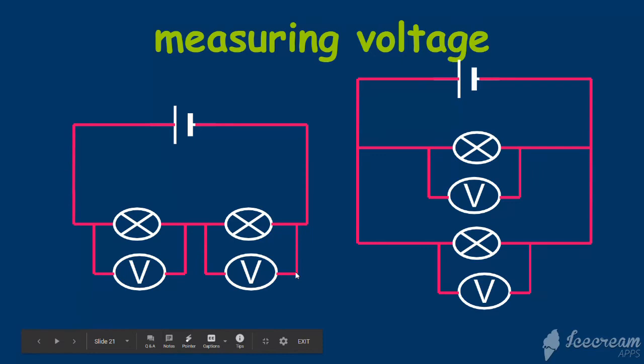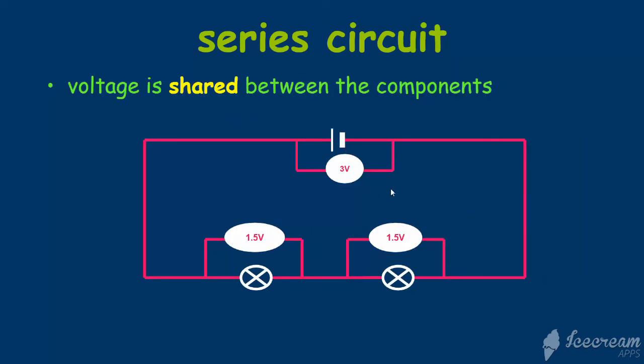Let's find what are the readings in different circuits. Imagine we have a cell that gives 3 volts of energy, and we put 2 lamps in series connected with this cell. This energy of 3 volts is shared with the lamps.